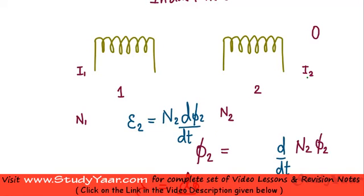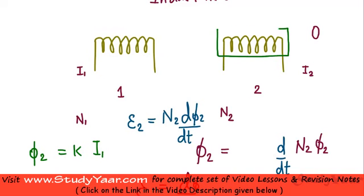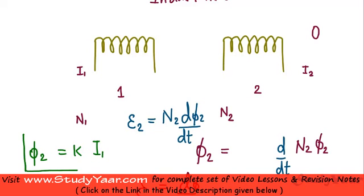The flux generated in this coil is due to the current flowing in coil number 1. Your flux is dependent on the magnetic field produced by coil 1, and that magnetic field is dependent on the current flowing in coil 1. Therefore, your flux in coil 2 is dependent on the current in coil 1, so I can say my flux is proportional to the current I1.